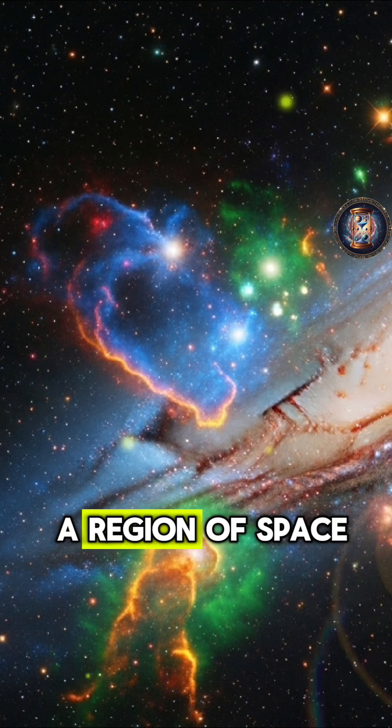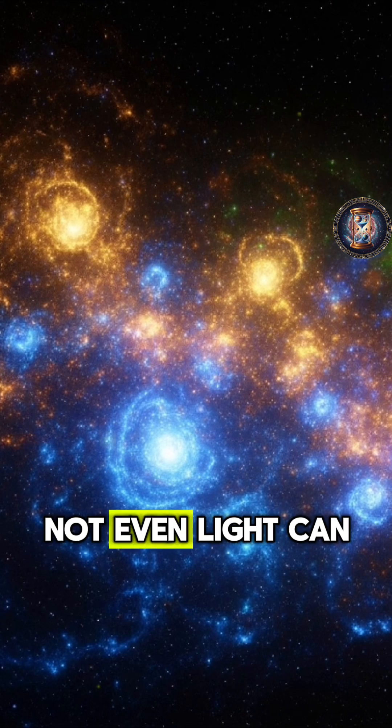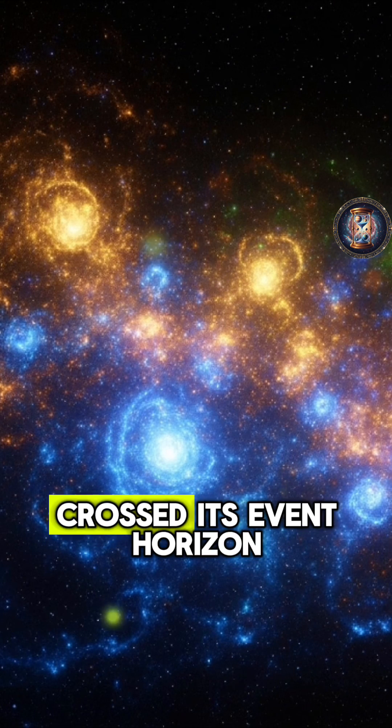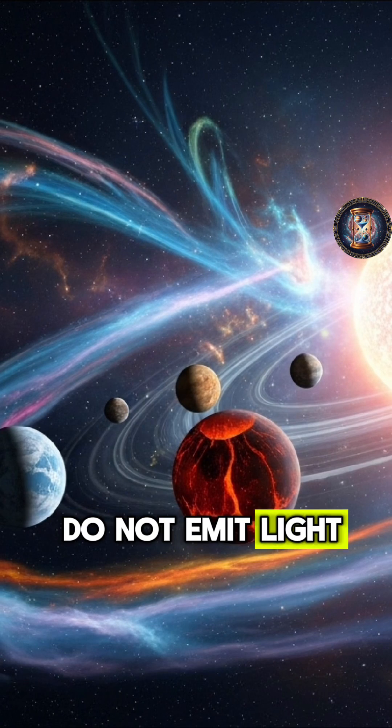A black hole is a region of spacetime where gravity is so strong that nothing, not even light, can escape once it has crossed its event horizon. We cannot directly see black holes because they do not emit light.